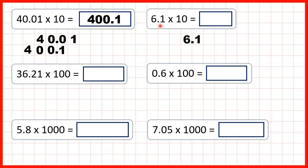Now we have 6.1, so we write the number out and copy down the decimal point. To multiply by 10 the digits move 1 square to the left. And that makes sense because when we have 10 of something we can exchange it for 1 of the place value to the left. So to multiply by 10 we move the digits 1 square to the left. If we do that we get 61 and then a decimal point. Now if we have a decimal point on the end of our number we have a whole number, so 6.1 times 10 is 61.